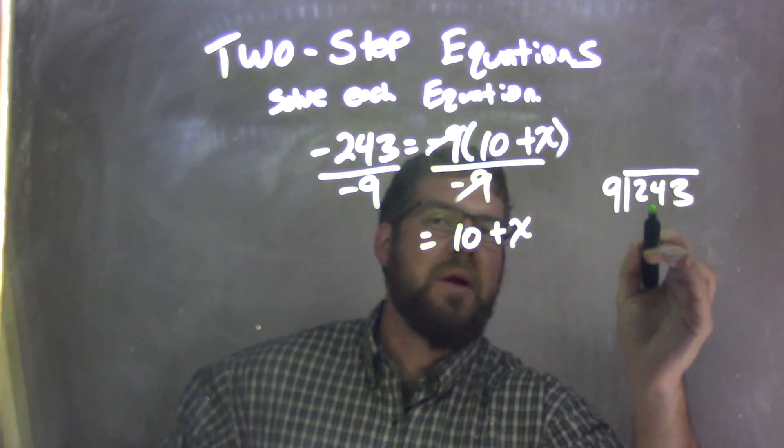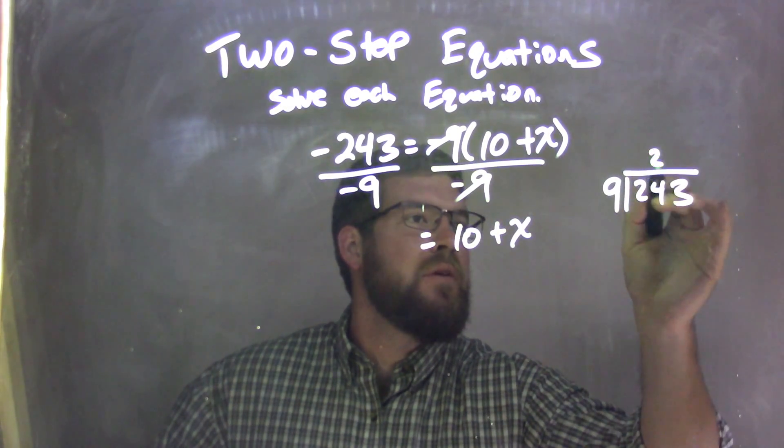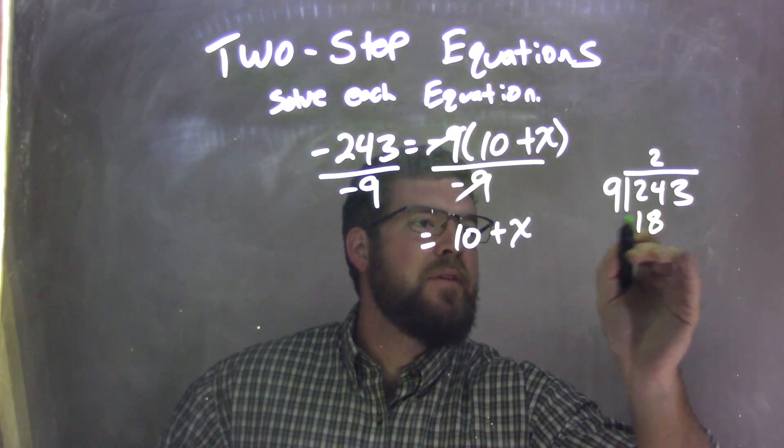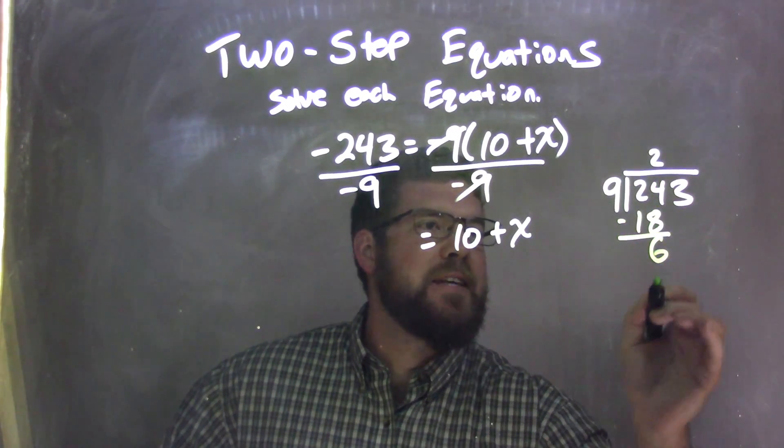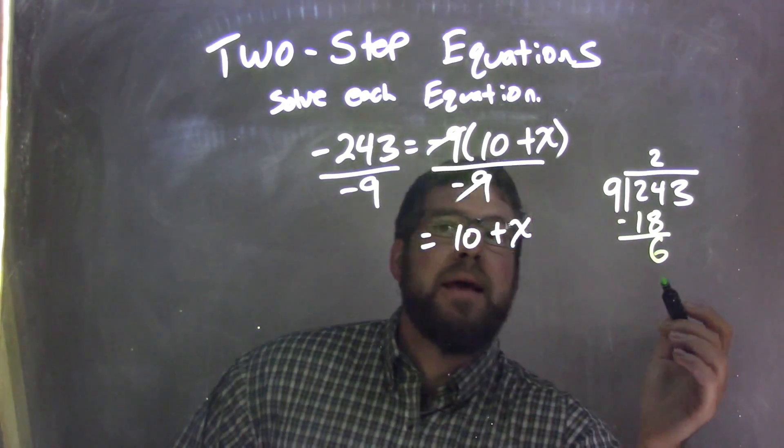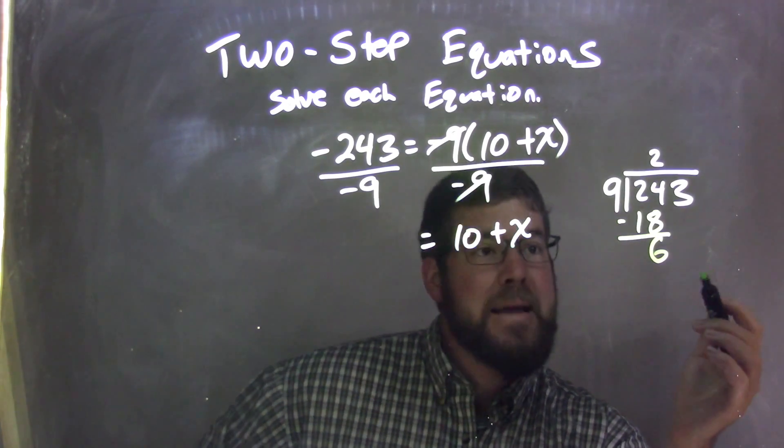Well, 9 goes into 24 two times with 18, right? 9 times 2 is 18. Let's subtract them. I have a 6 here. Well, how many times does...